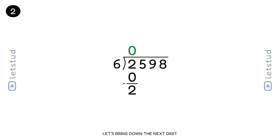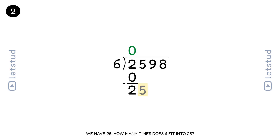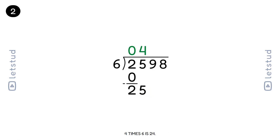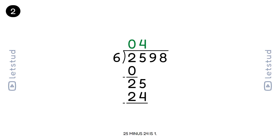Let's bring down the next digit. We have a remainder of 2 and bring down the 5 to make 25. 6 fits into 25 four times. 4 times 6 is 24. 25 minus 24 is 1.